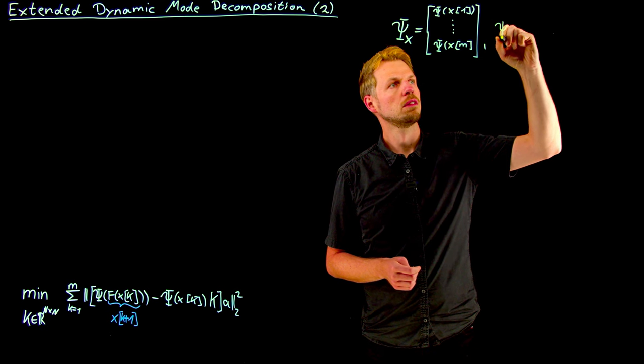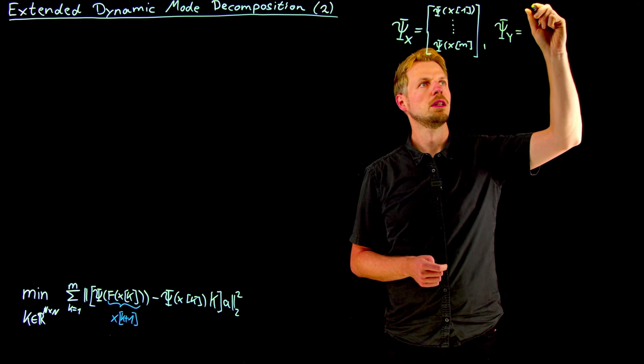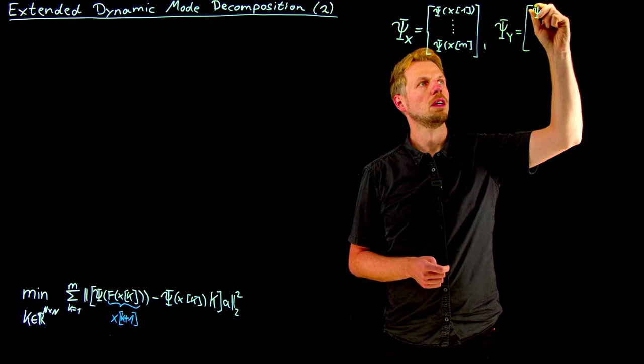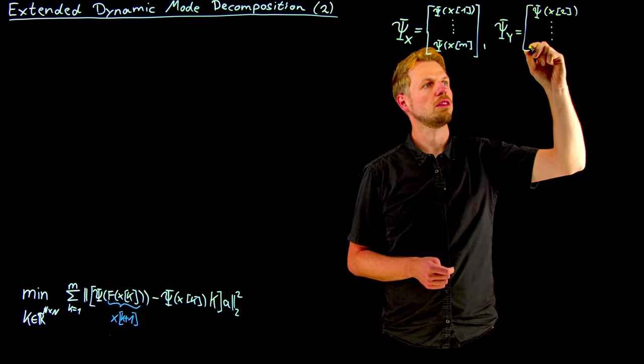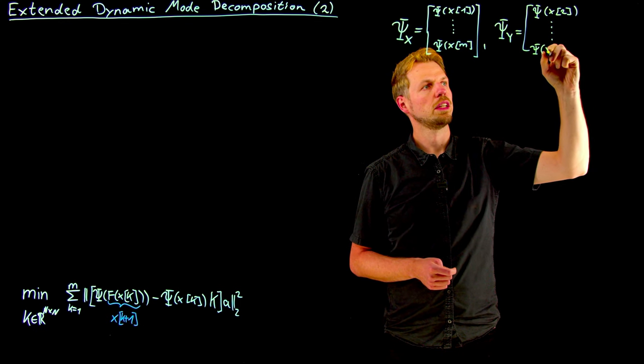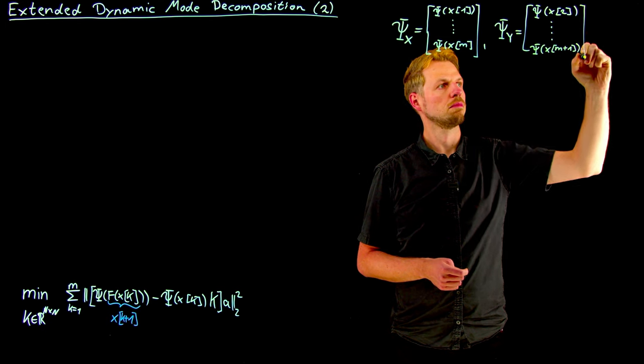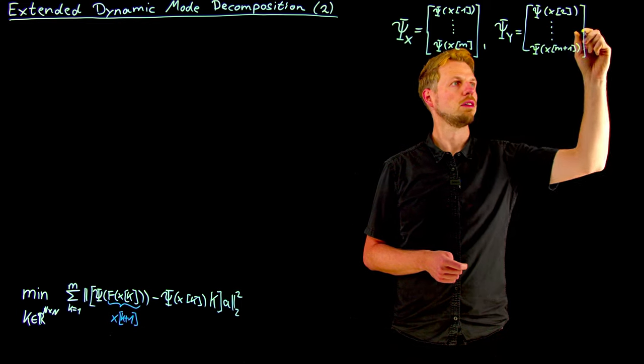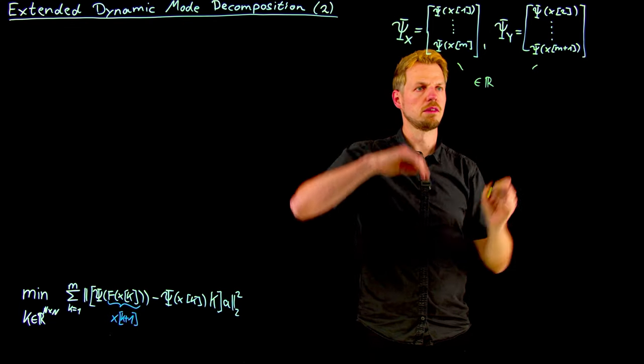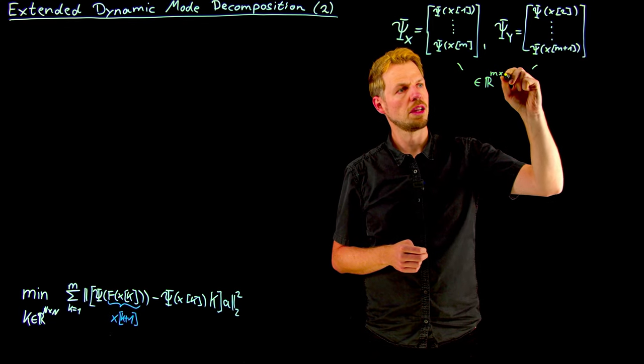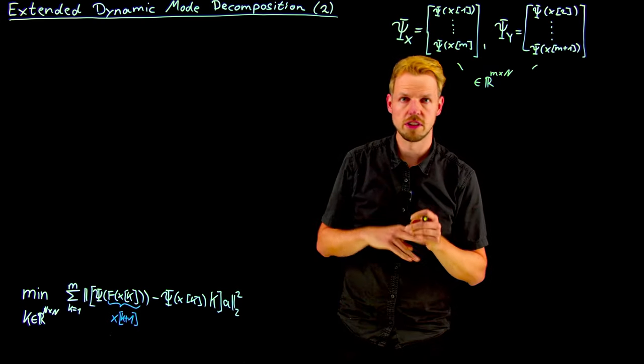So psi y is almost the same matrix, only every row is shifted forward in time by one time step. So this is our basis functions evaluated at x2 and then our basis functions evaluated at xm plus 1. So you see both of these matrices are matrices of dimension m samples times n of these basis functions because each of these psi basis matrices contains n basis functions that we need to define ourselves.